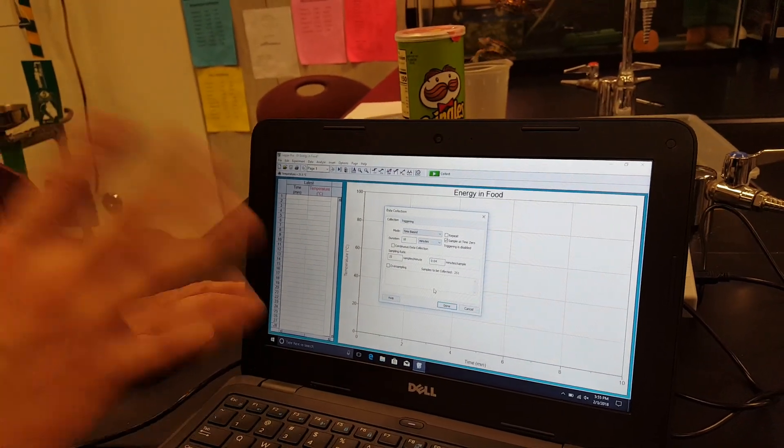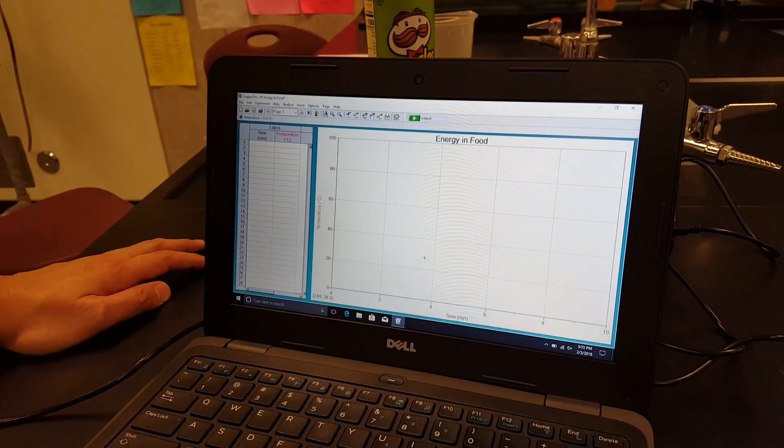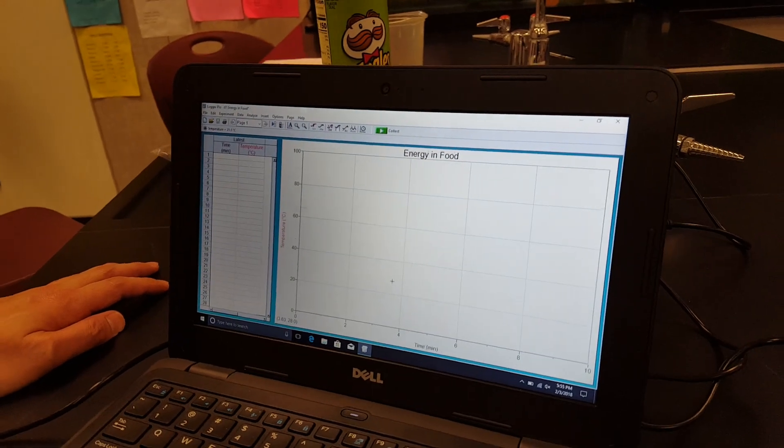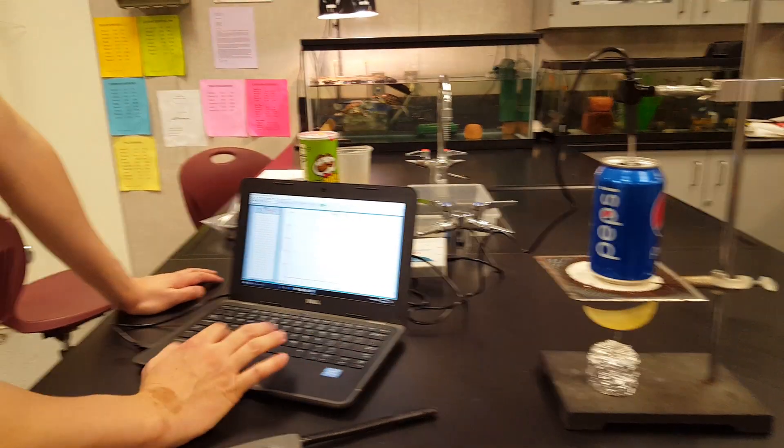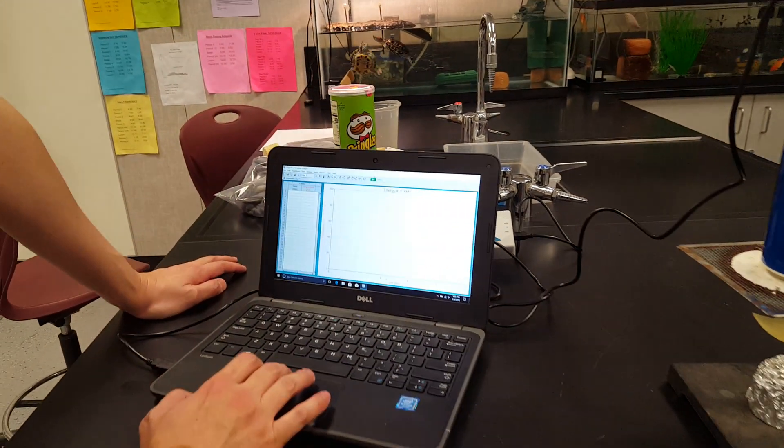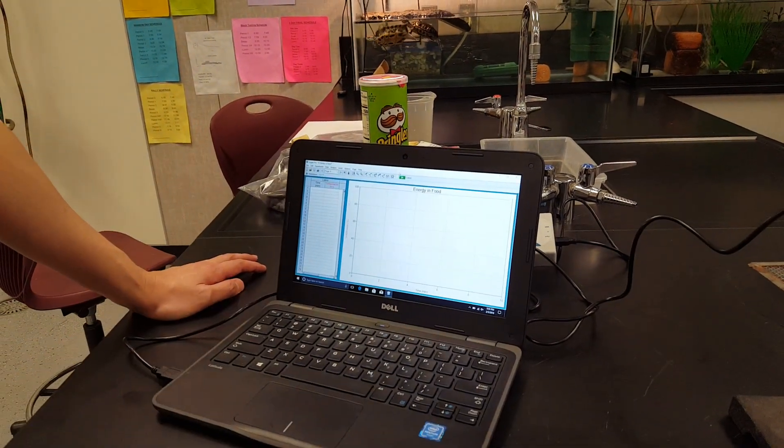Everything else you could leave the way it is. Okay, and you just click done. When you are ready, you're going to ignite this Pringles chip. Click the play button right here or the collect button, and you're just going to let it go for 10 minutes.